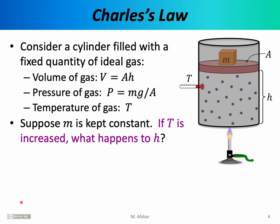The next important discovery about the ideal gas was made almost a century later by the French physicist Jacques Charles. Charles was using essentially the same setup as Boyle — a cylindrical container equipped with a piston, we can measure temperature, we can add masses, and we can add or subtract energy to the gas. Charles was interested in investigating a slightly different question from Boyle. Charles was assuming that mass was kept constant and he wanted to know: if temperature is increased, what happens to the height of the gas inside the cylinder?